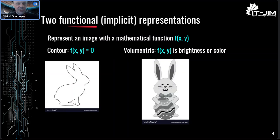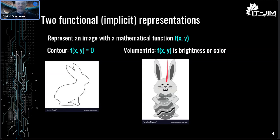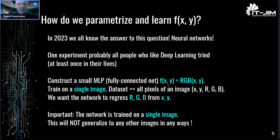There are at least two different functional representations where an image can be represented with a mathematical function f of x and y. The first one is contour representation where f equals zero is the implicit equation giving us some kind of contour. The second one is the volumetric representation where the function f gives brightness or color of each single pixel with coordinates x, y — or maybe not pixel but a continuous point in space. But in order to do it in practice, we have to parametrize and learn the function f of x and y somehow.